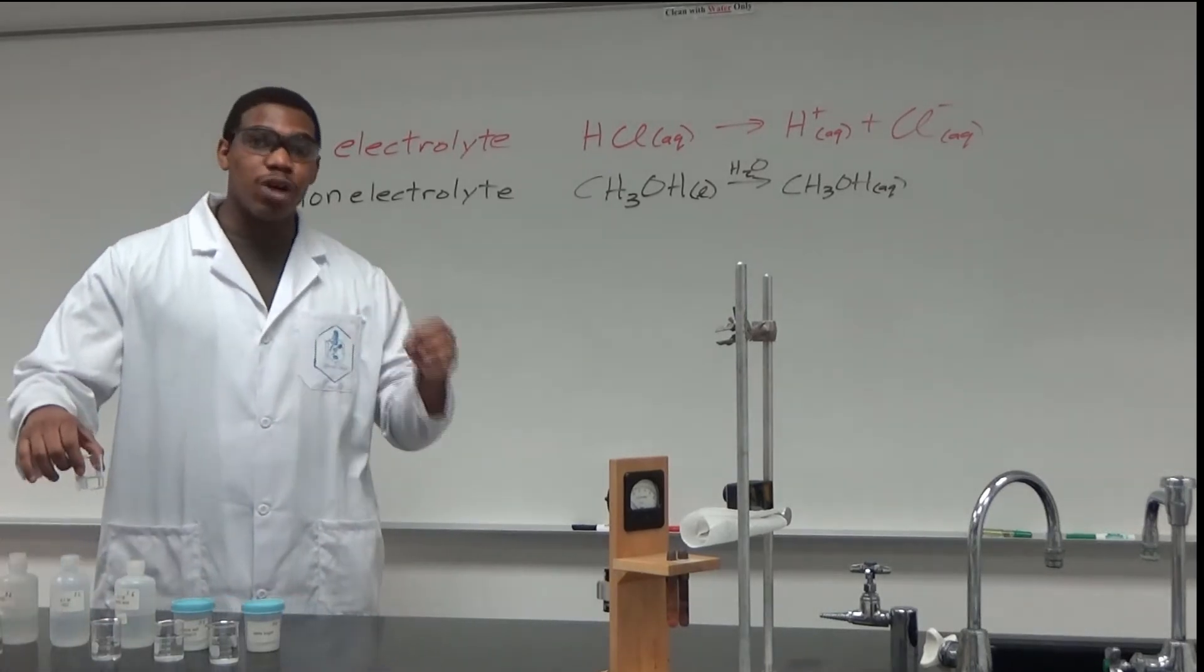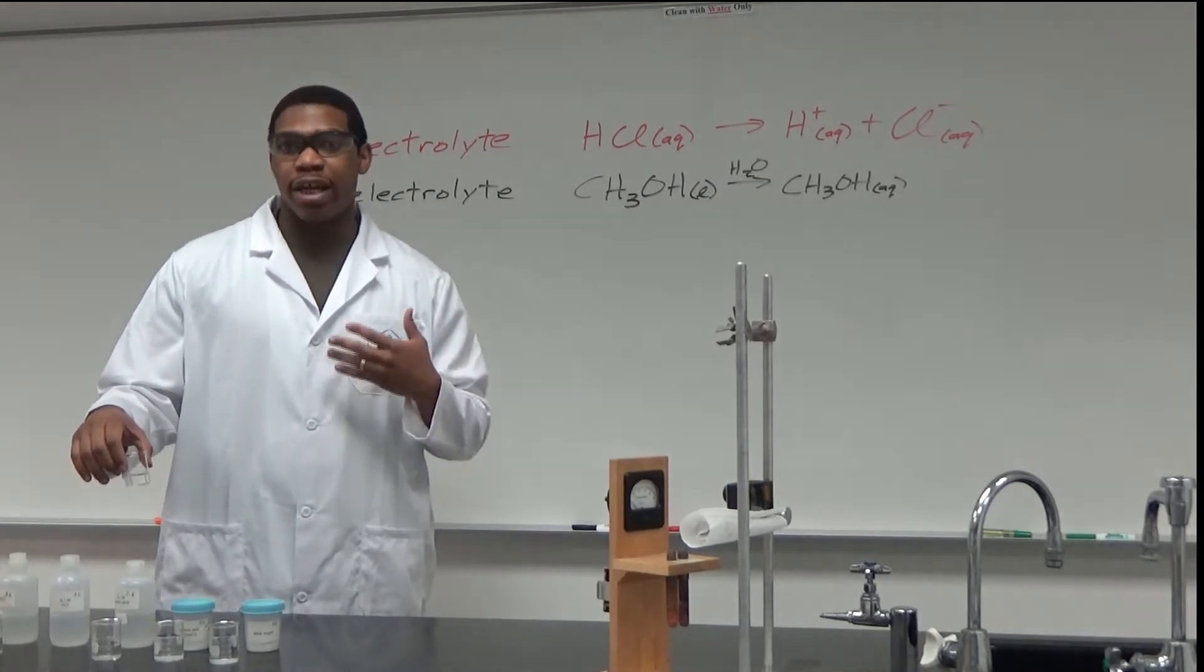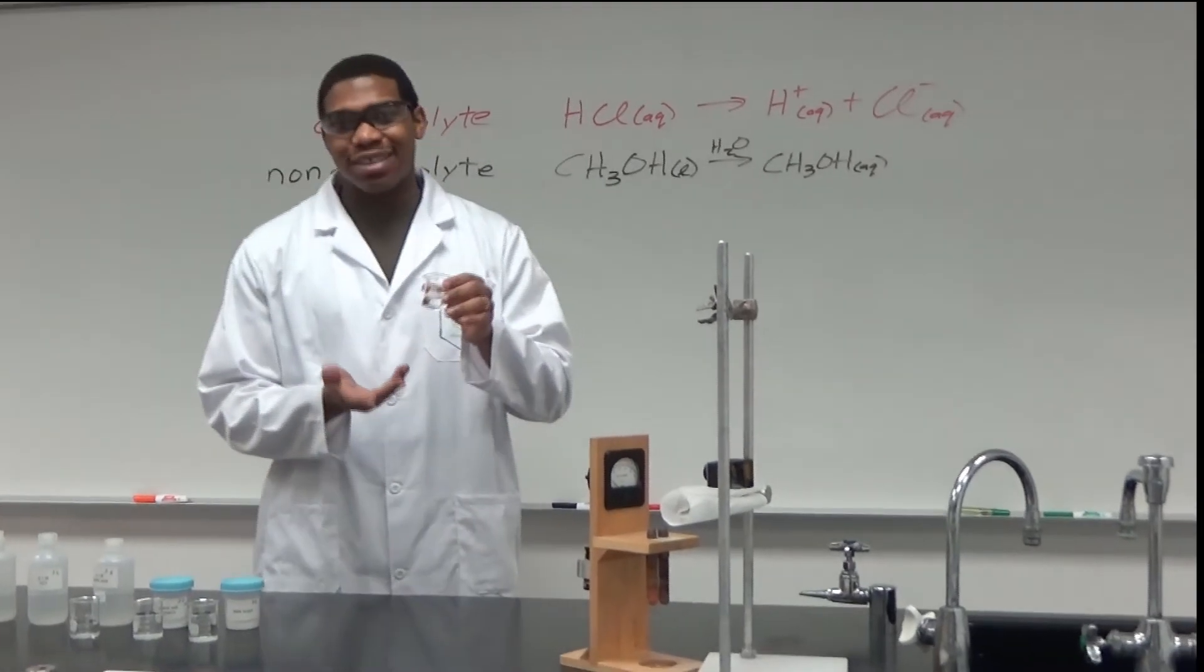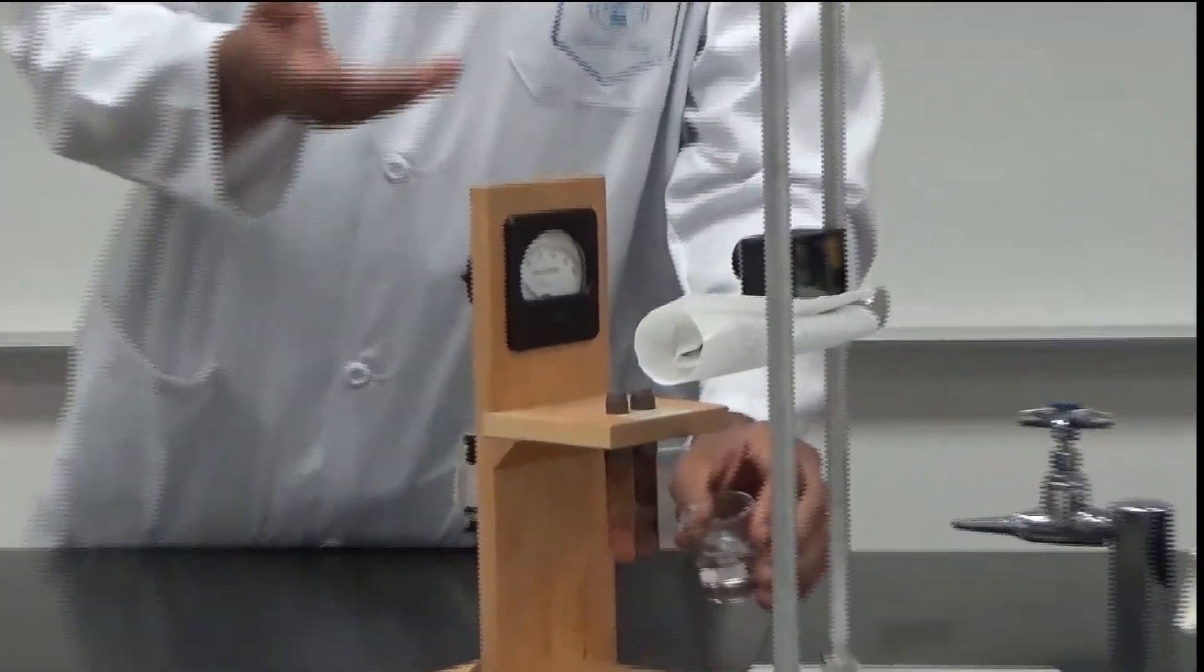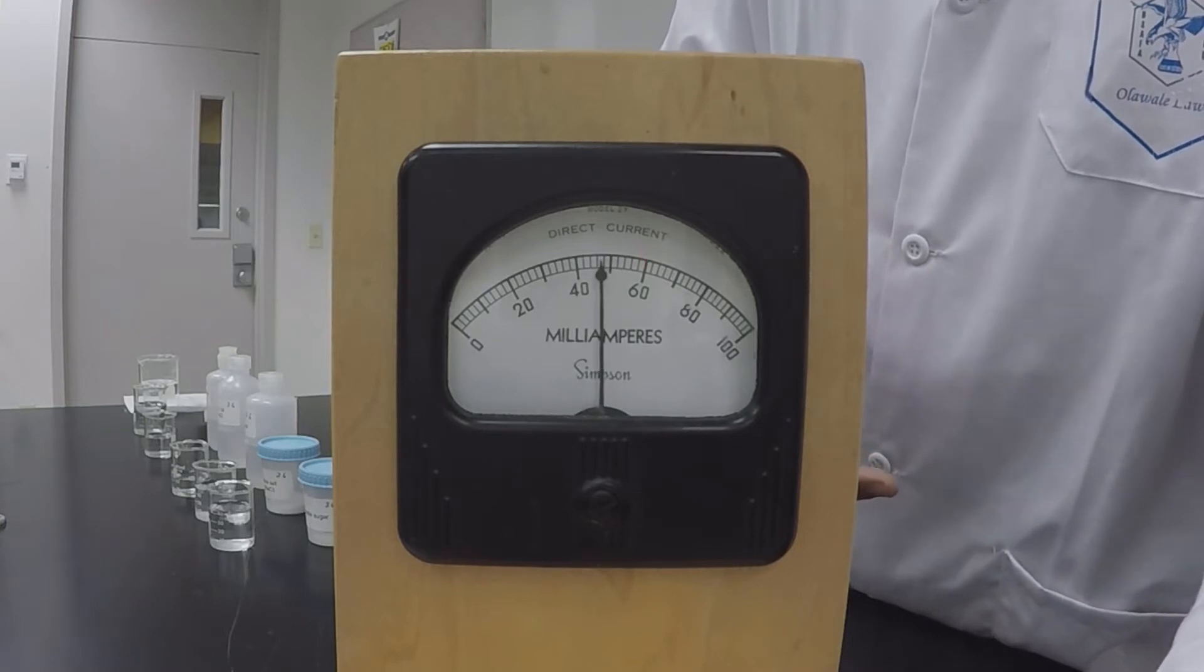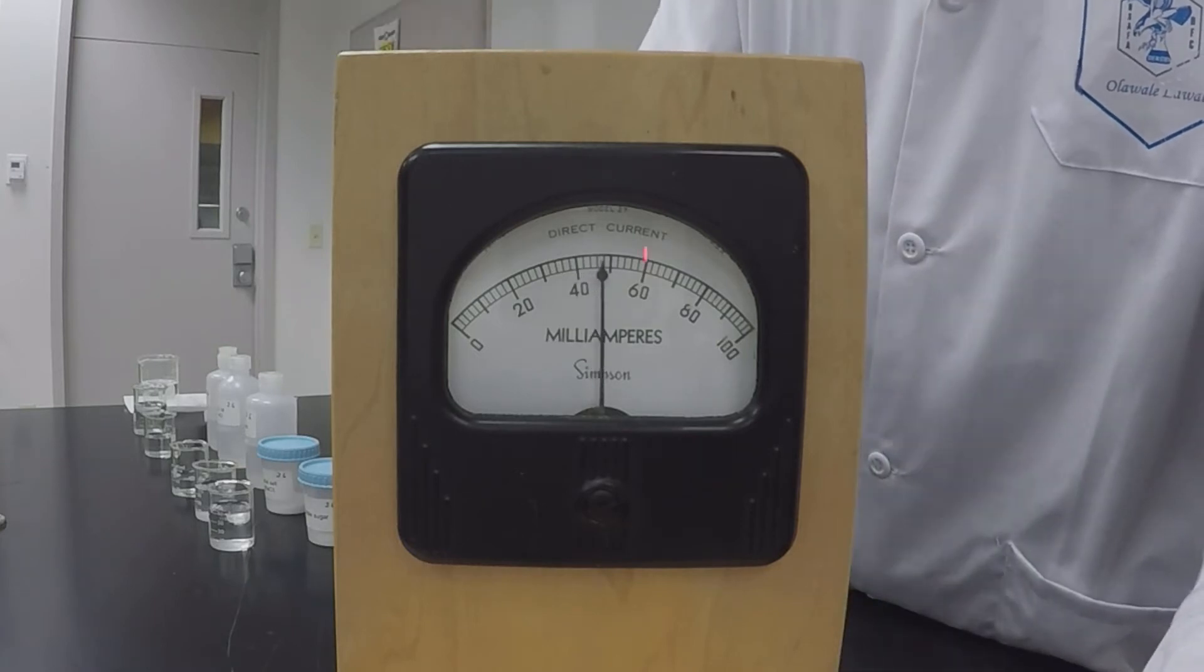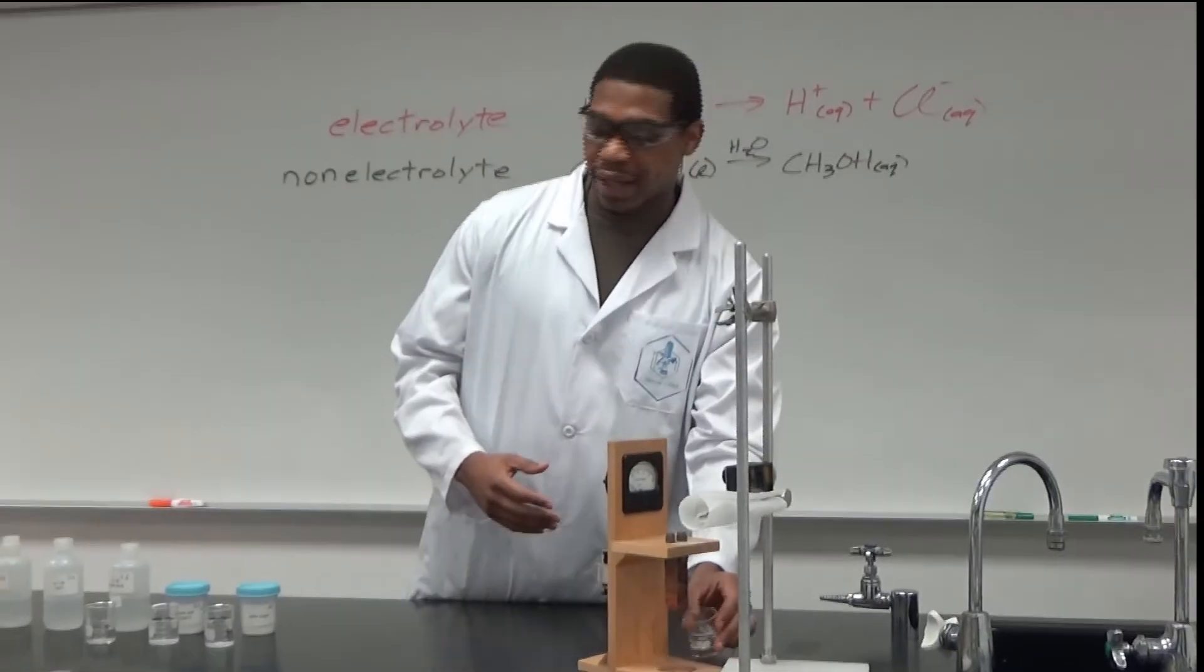Hydrochloric acid is a really strong acid - it completely dissociates in water, generating both positive and negative ions. When we take this hydrochloric acid, this is a diluted solution, and place it into the conductivity meter, we can see that it's really generating a lot of conductivity. The arrow has spiked up, demonstrating that the solution is conductive.